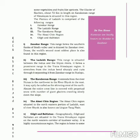Iske baad ham parhenge de Karakoram range. It extends from the river Hunza in the northwest to the river Shiok in the east. Yaini ki Karakoram range ka silsila shumal maghrib mein deriayi Hunza se mashrik mein deriayi Shiok tak pahla hua hai. It may aptly be called as the shining crust of the earth.